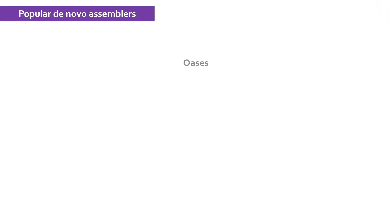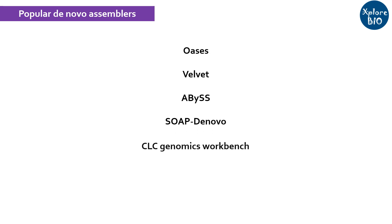Velvet, ABySS, SOAPdenovo, CLC Genomics Workbench, and Trinity are some of the most popular sequence assembly tools. Each of these has its own advantages and limitations that need to be considered before selecting one for your study.